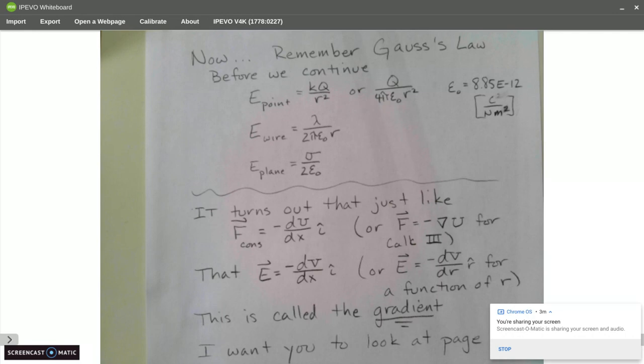Now some quick review also. We want to remember Gauss's law before we continue. And there are three of them, E of a point, E of a wire, and E of a plane. Remember we use epsilon 0 more often than the letter k for constant. But 1 over 4 pi epsilon naught is equal to k, which is 9.9.